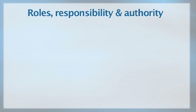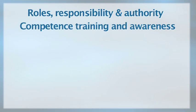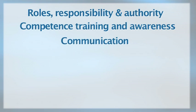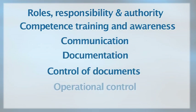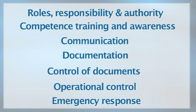4.4 Implementation and Operation is the second section of ISO 14001. It really is how the organisation is managing their management system on a day-to-day basis. It includes seven sections: roles, responsibilities and authority, competence, training and awareness, communication, documentation, control of documents, operational control and emergency response.